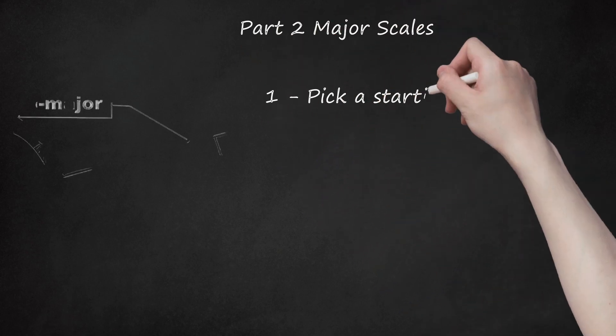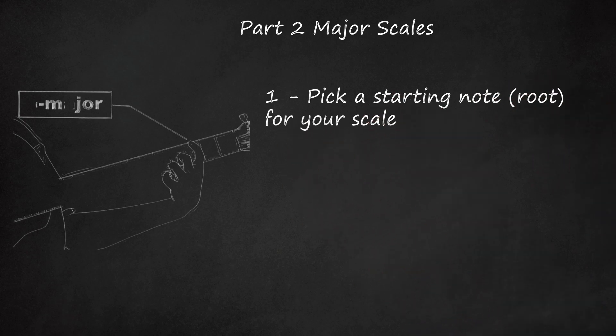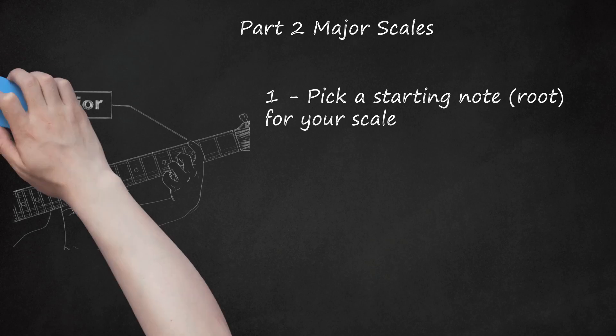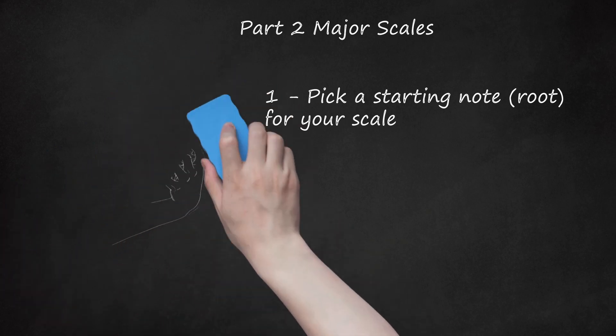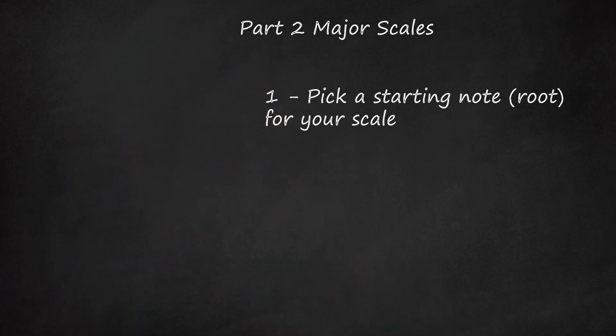Part 2: Major Scales. Pick a starting note — the root — for your scale. The type of scale we'll learn in this section is the major scale, a good choice to learn first because many other scales are based off of it. You can start a scale on any note at all. To begin, pick any note below the twelfth fret on the low E or A string. Starting on one of the lower strings gives you plenty of room to move up and down the scale. For example, let's start on G — low E string, third fret. In this section, you'll learn how to play a G major scale; scales are named after their root note.